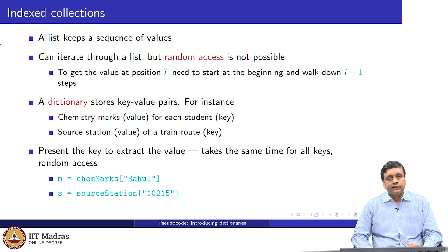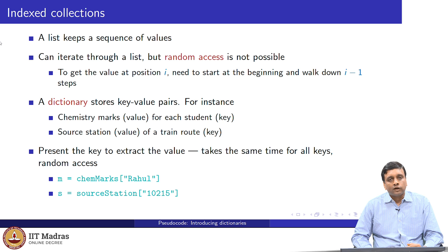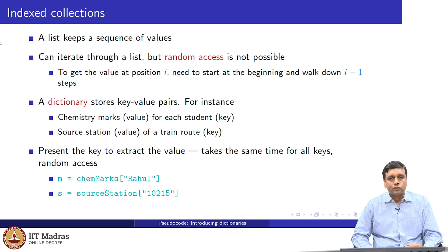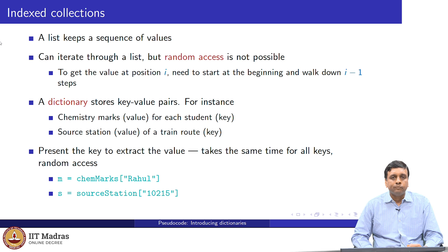In contrast, a dictionary allows us to access values by some index, which is typically called a key. A dictionary stores key-value pairs. The key can be anything reasonable — for instance, we can keep values indexed by names. We could keep, in our scores dataset, the chemistry marks of students indexed by the name of the student. In this case, the key would be the name of the student and the value would be the marks in chemistry for that student.